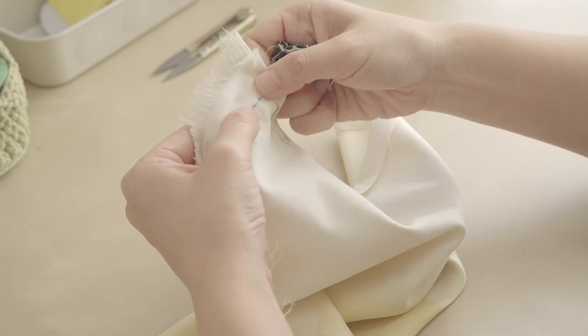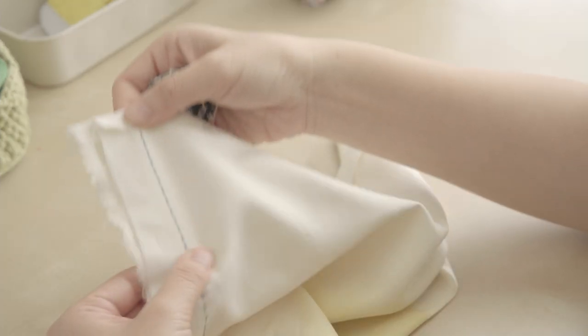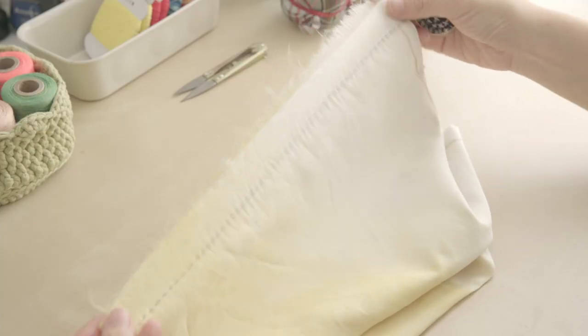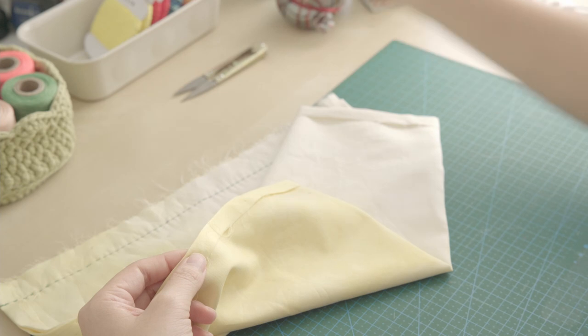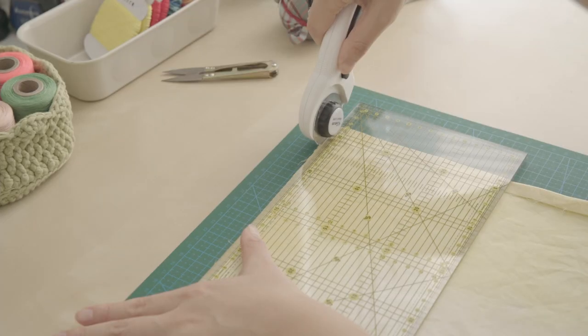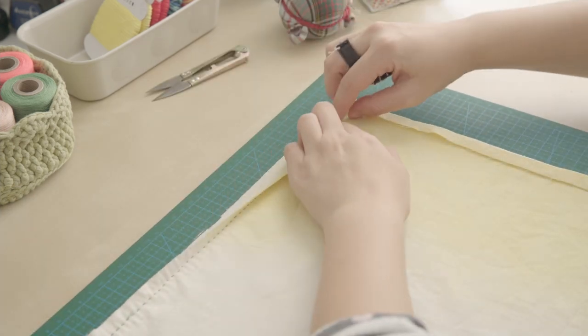You can use the same method to prepare your pre-printed sampler hana fukins. I like to trim this edge to about 1 cm and finger press it to avoid the bulkiness.